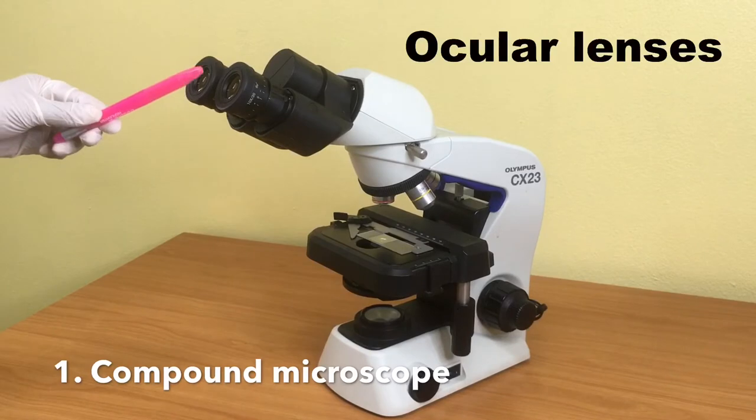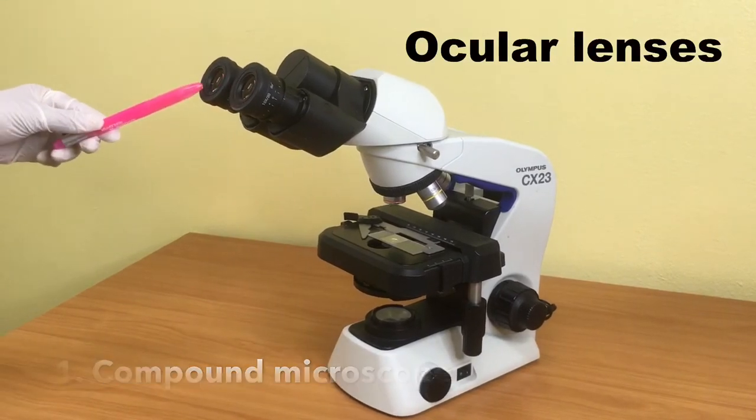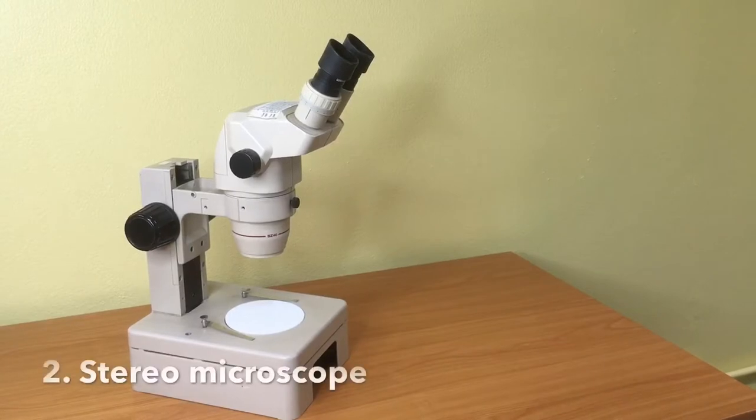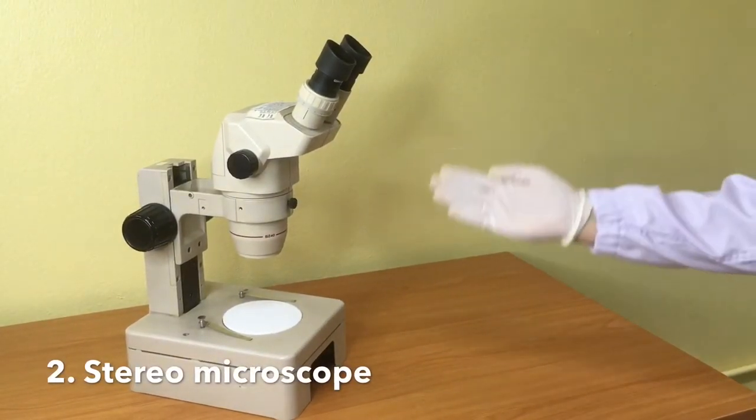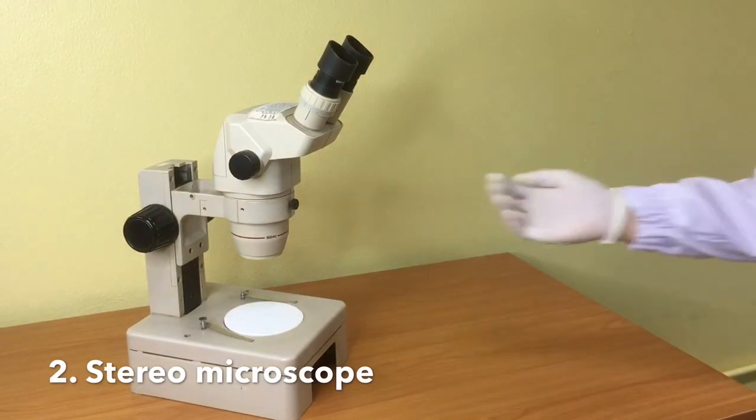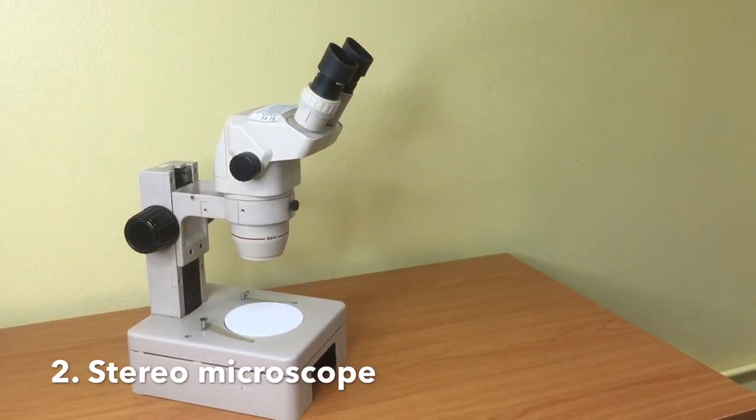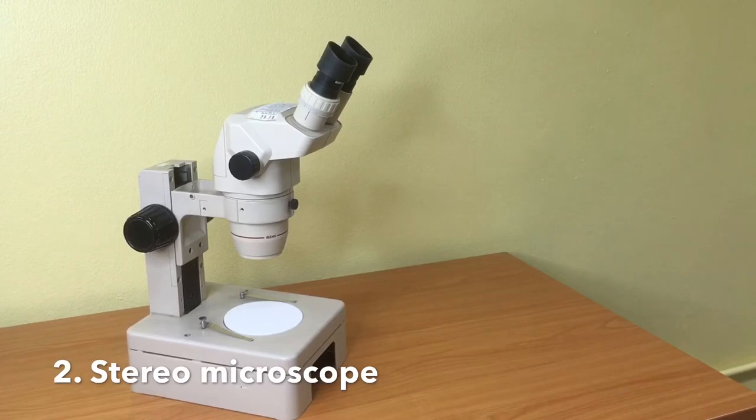Here is a binocular compound microscope with twin ocular lens. Here is the second type, which is called a stereoscopic compound microscope. We usually call it stereomicroscope.